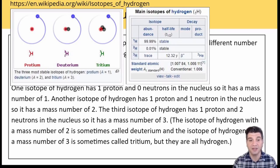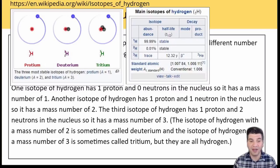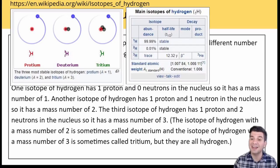Nuclei that have the same number of protons in the nucleus but a different number of neutrons are called isotopes. Hydrogen has three different isotopes. One isotope of hydrogen has one proton and zero neutrons in the nucleus, so it has a mass number of one.